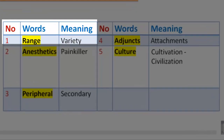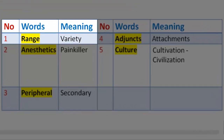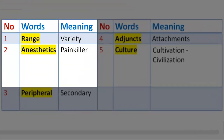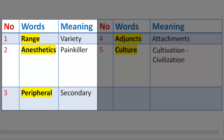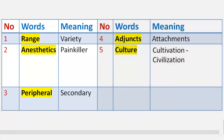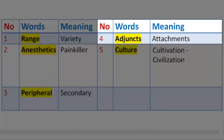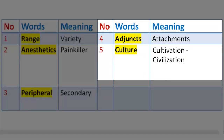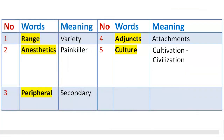Vocabulary 4. Number 1: Range — meaning variety. Number 2: Anesthetics — meaning painkiller. Number 3: Peripheral — meaning secondary. Number 4: Adjuncts — meaning attachments. Number 5: Culture — meaning cultivation, civilization.